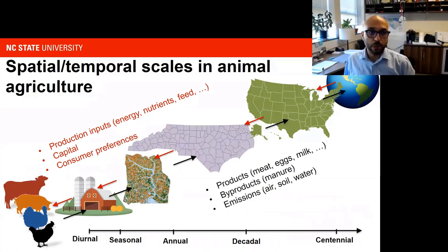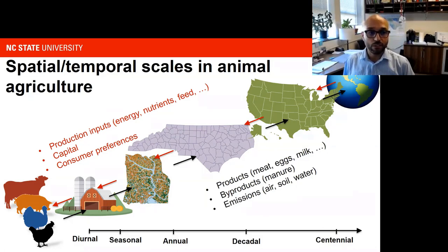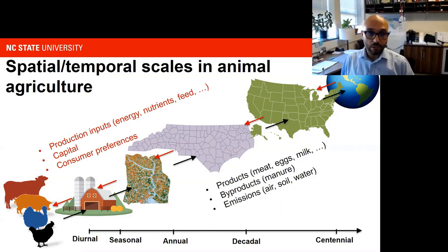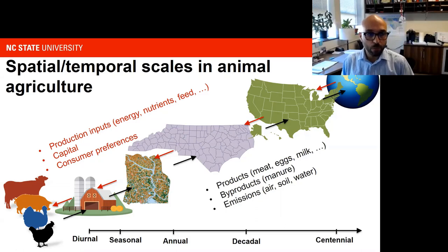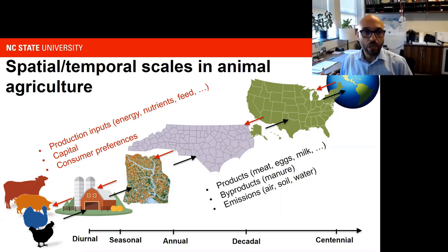I'd like to start generally with this graphic that illustrates the scale of how animal agriculture plays out across multiple spatial and temporal scales. Generally for producers, the scope is the farm limits — crop, animal, storage, and management. But generally, the movement of commodities and production inputs crosses a lot of boundaries, from the watershed to county, state, national, and global boundaries.